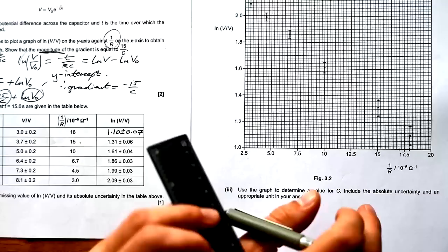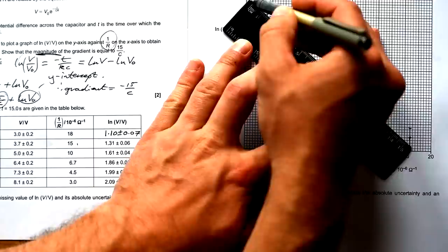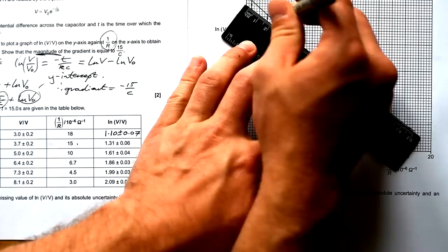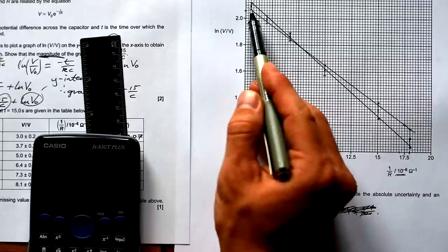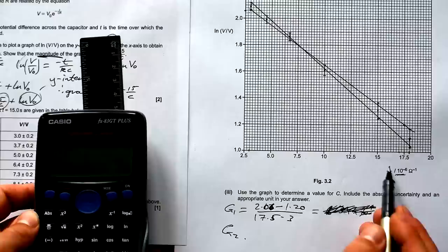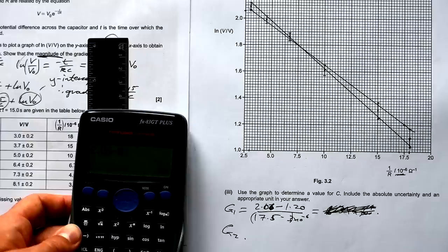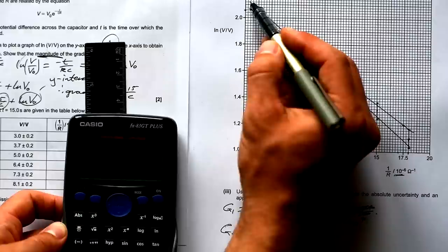Use the graph to determine a value for C. Include the absolute uncertainty and an appropriate unit for your answer. Now, you can take just a line of best fit. But the way that OCR like you to do it is to actually take both lines of worst fit. Now, these really are going to be worst fit because I do not have a long enough ruler. When you do this, you can have a longer ruler. So there is my highest and there is my lowest. Let's find out my first gradient. So let's pick this point here: 2.06 down to this point. So that's 2.06 take away 1.2 divided by 17.5 take away 3.